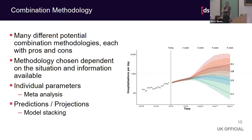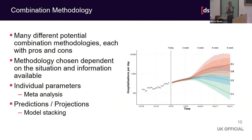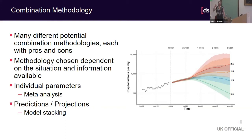There are different combination methodologies, each with pros and cons, and you need to choose depending on the situation. My interpretation was: if I'm looking at individual parameters that I could in principle go out and measure, I would use meta-analysis. However, if I have what were originally called predictions and then projections, meta-analysis doesn't work because I can't actually go and measure it — you're projecting the future. In that case, model stacking will probably work better.